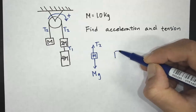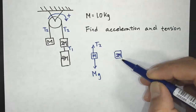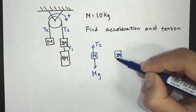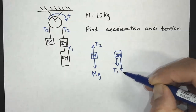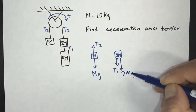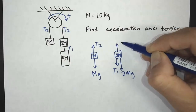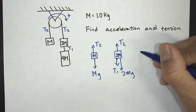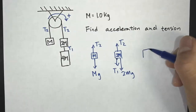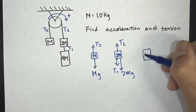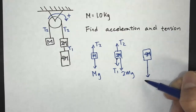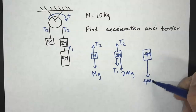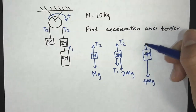Now for the force diagram for 2M: there's going to be T1 going in one direction, and then 2Mg downward, and going up we have T2. And then for our third mass, 4M: it has 4Mg downward and T1 going up.